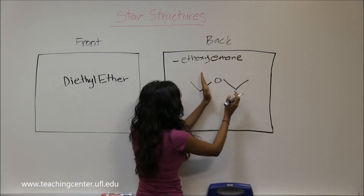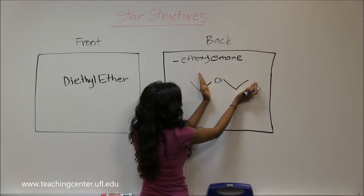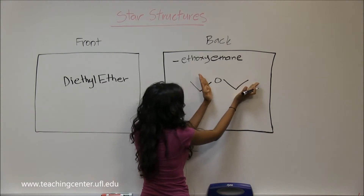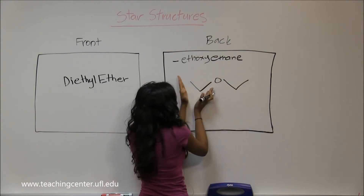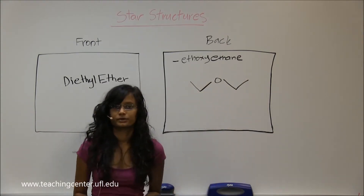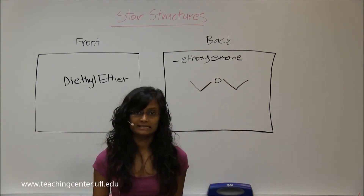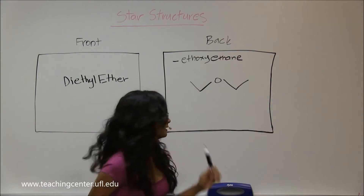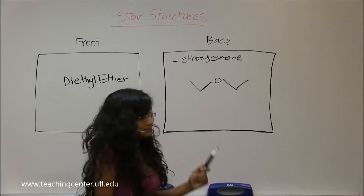So this is — including the oxygen — ethoxy, and that's ethane. That's how you would normally say it in the IUPAC version.